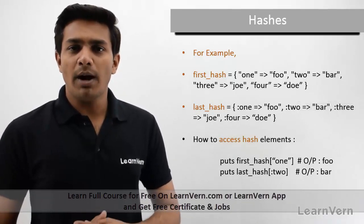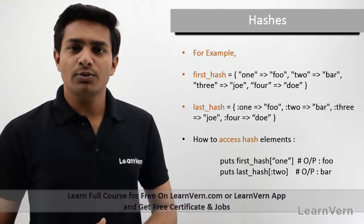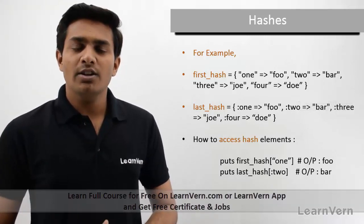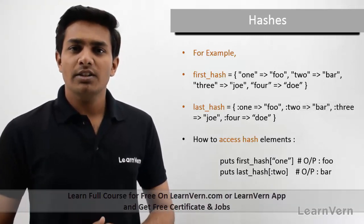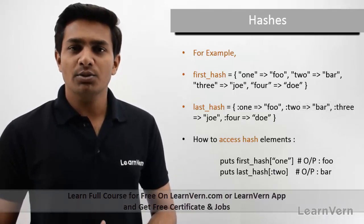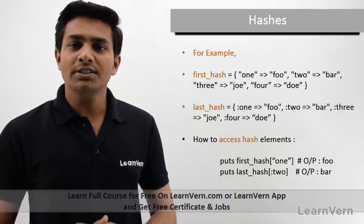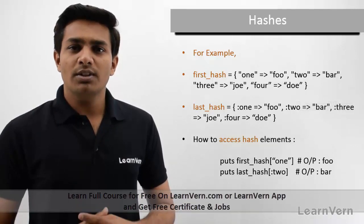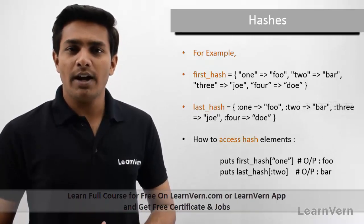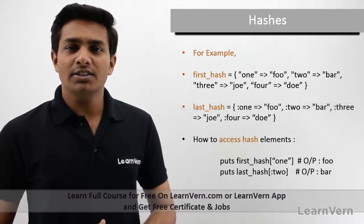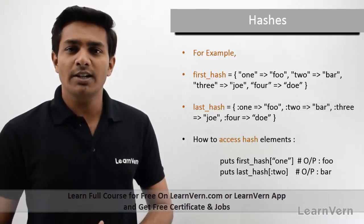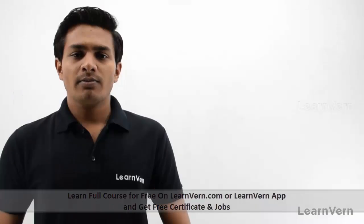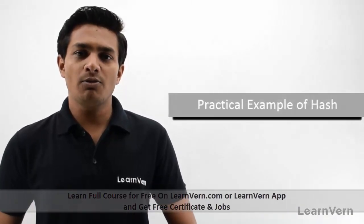Suppose I want to access the value 'bar' from the second hash. I write the hash name — last_hash — and pass the key related to that value. The key is ':two', which is a symbol, so I pass that symbol into the brackets. It returns the value 'bar'. This is how we work with hashes. Now we will see practical examples.